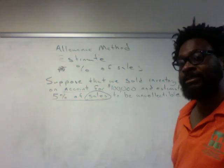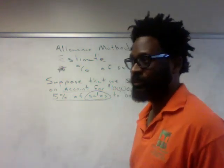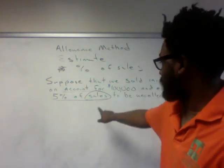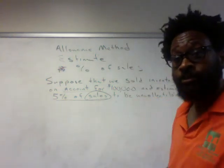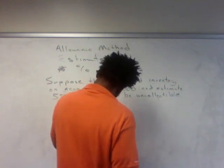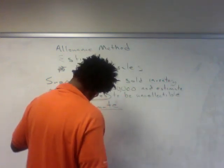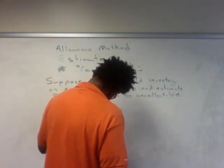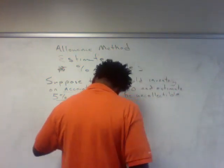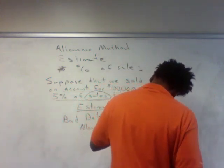If we wanted to make an estimate based on this information, we would have two choices: percentage of sales or percentage of receivables. But obviously we know which one we are encouraged or forced to do, and that's percentage of sales — it's total sales. So when it's time to do the actual estimate, we will go to the journal entry we already know, which means we would debit bad debt expense and credit allowance for uncollectible accounts.